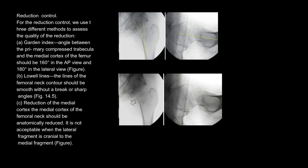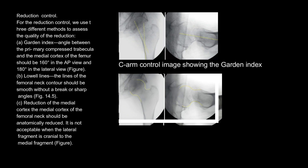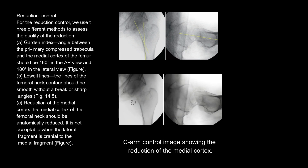Method B — Lowell Lines: The lines of the femoral neck contour should be smooth without a break or sharp angles. Method C — Reduction of the medial cortex: The medial cortex of the femoral neck should be anatomically reduced; it is not acceptable when the lateral fragment is cranial to the medial fragment. C-arm control images show the Garden Index, Lowell Lines in AP and lateral view, and reduction of the medial cortex.